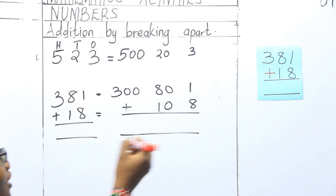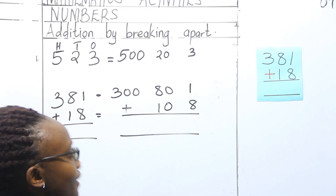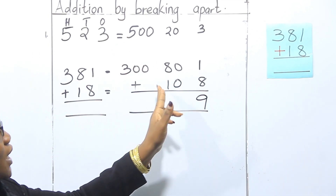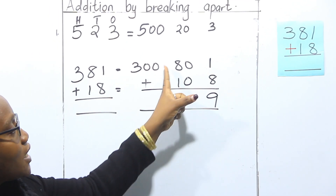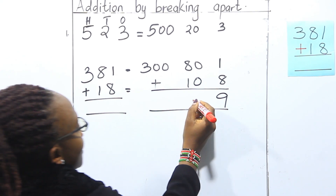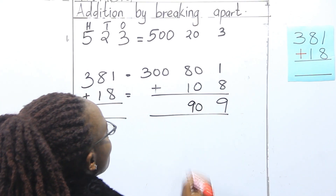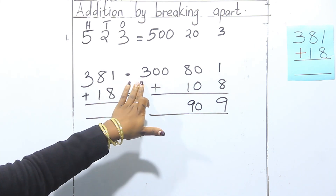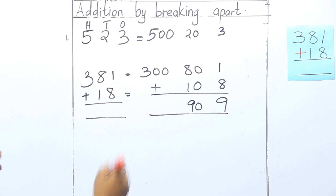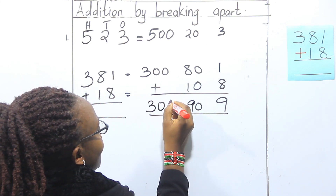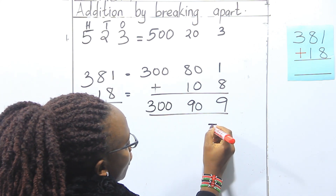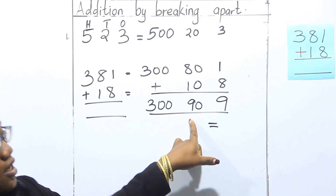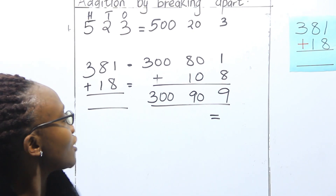What is one plus eight? One plus eight is nine, so we write nine. Then we have 80 plus 10 — what is 80 plus 10? 80 plus 10 is 90. Then lastly we have 300, and since we don't have any other hundreds to add, we keep that 300.